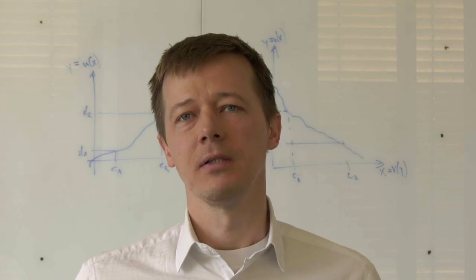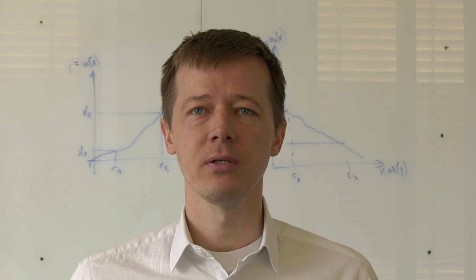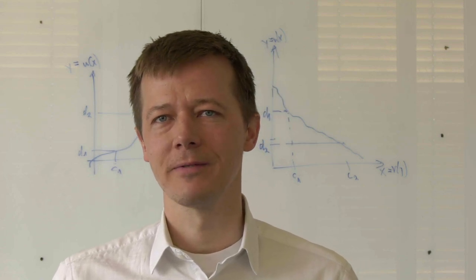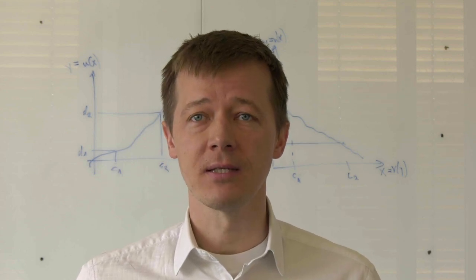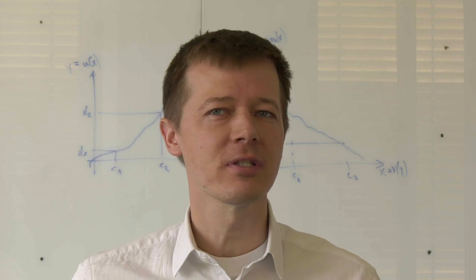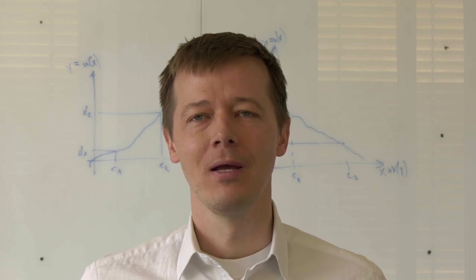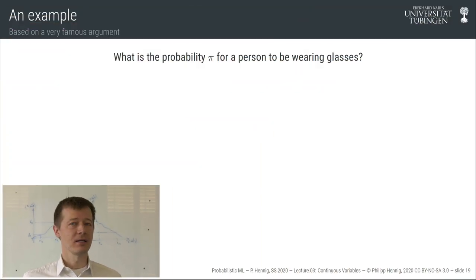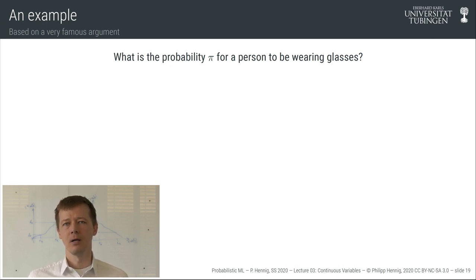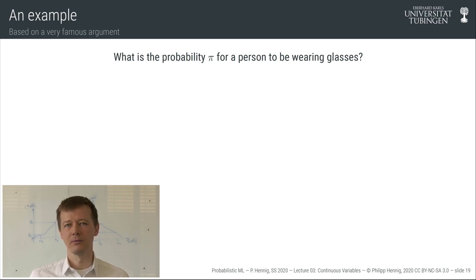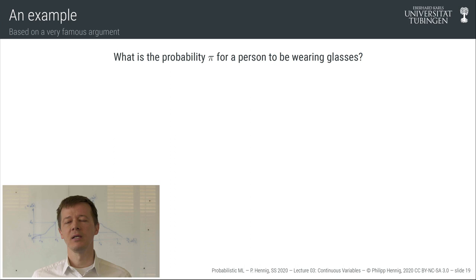Let's end this lecture with a real example to finally start doing some ever-so-simplistic machine learning. Let's say I want to know the proportion of people in the population who wear glasses. That's a template for fundamental questions you might want to ask about the population. How do we do this using a probabilistic or Bayesian approach?